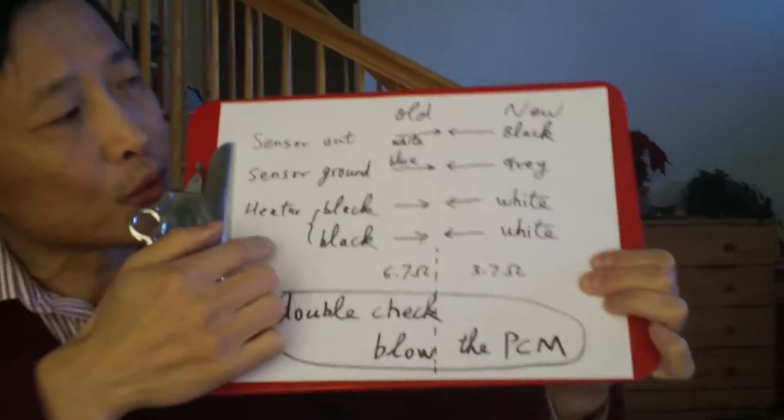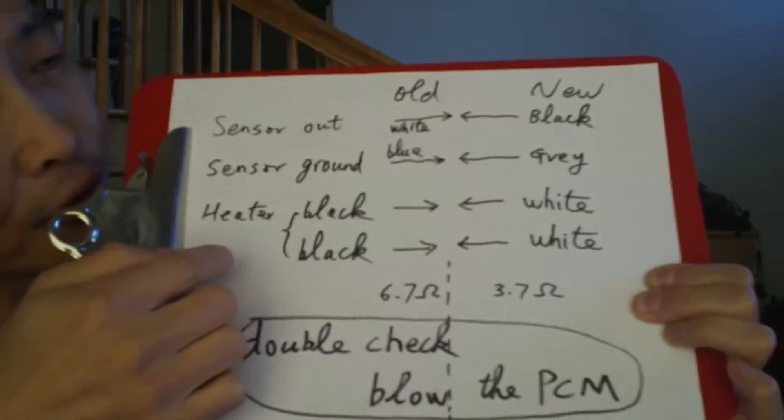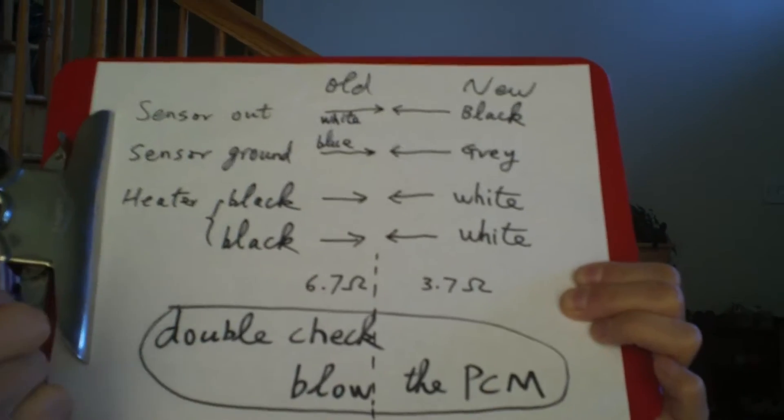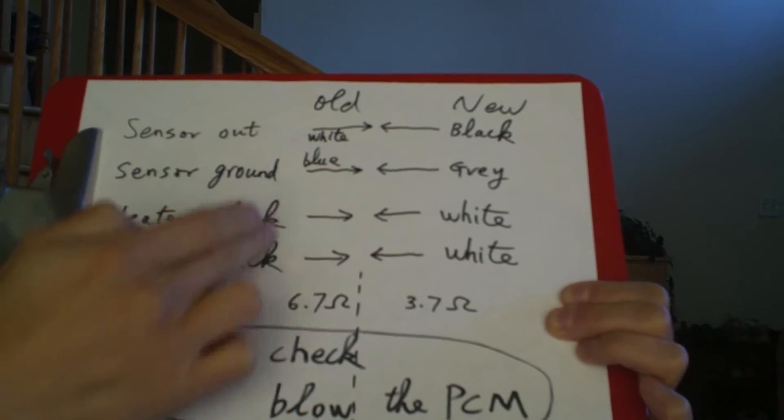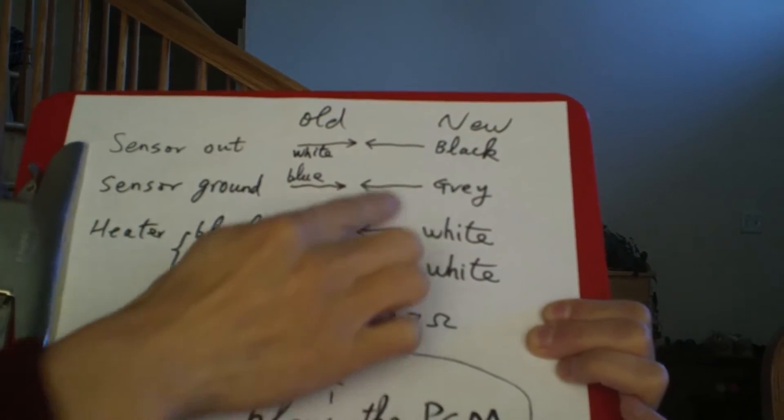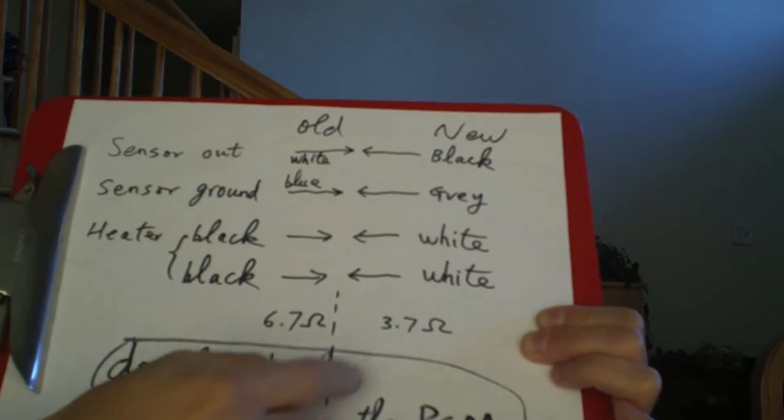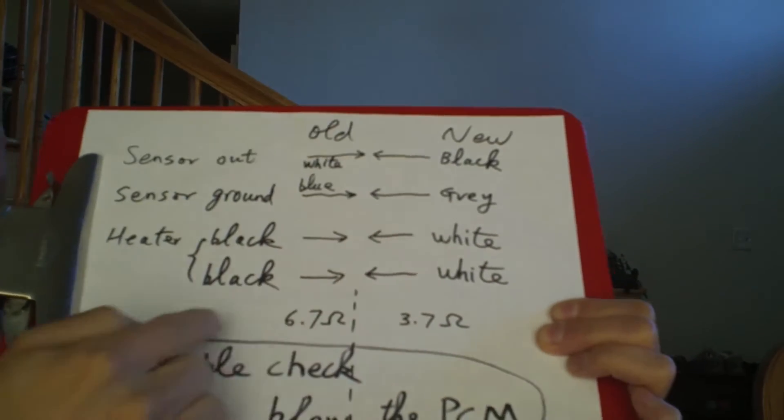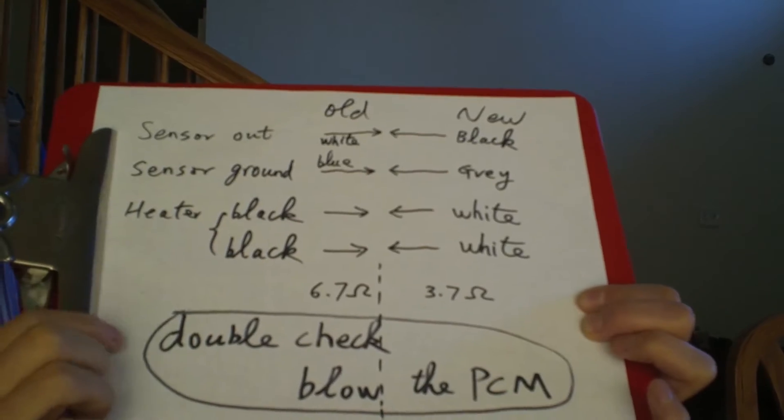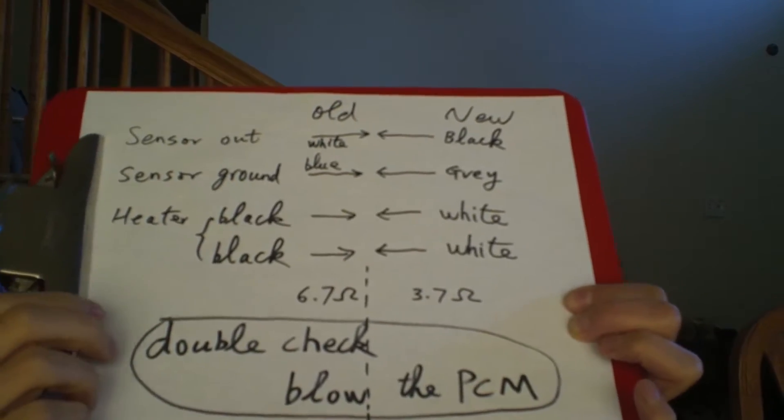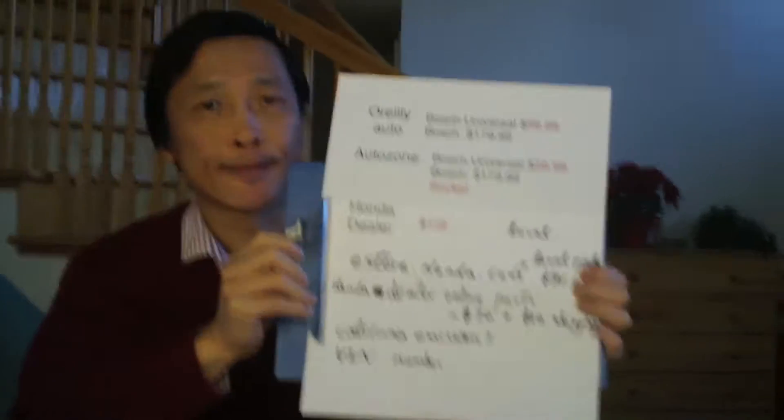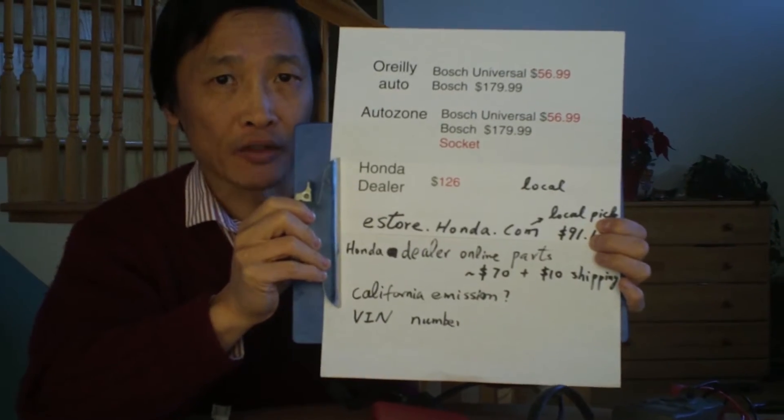The second point, if you do want to use the universal oxygen sensor, you need to really be careful about the wiring. On this side is the Honda, the color I mapped to the universal wiring. So you have to really carefully double check to make sure this is correct. If you don't make the correct connection, you may damage the PCM controller. I decided to go with the genuine Honda part.